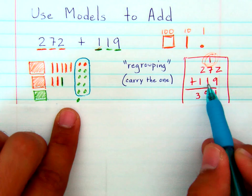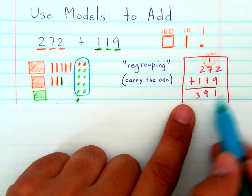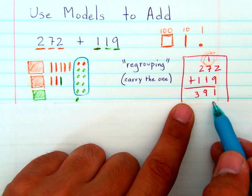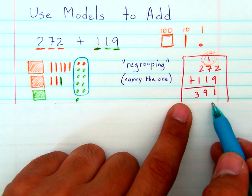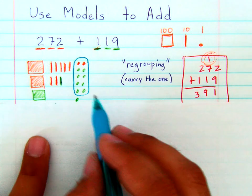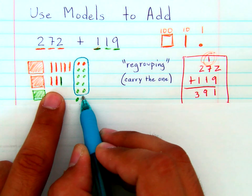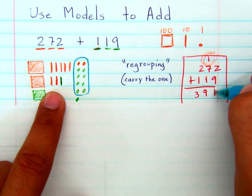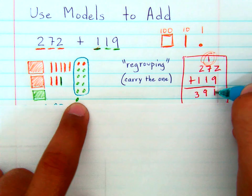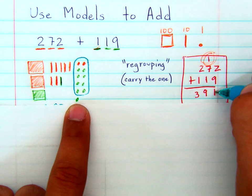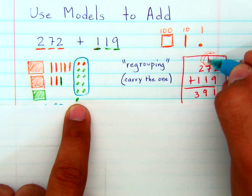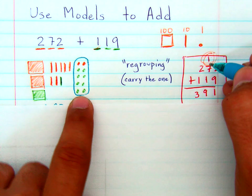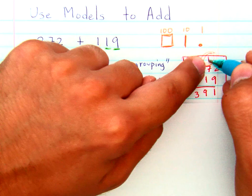Now over here, which is the way we all know how to add, and this is the way my 3rd graders will be adding in 4th grade and 5th grade and forever more. But I want them to be able to show me why this 1, when you add 2 and 9 and you get 11, why you write the 1 here, representing that 1 single unit, and why you carry the 1 up here, representing the 10 ones that are now a 10 in the tens place.